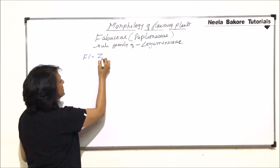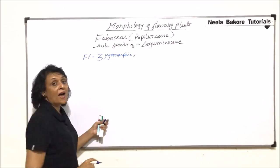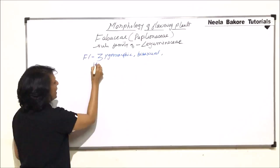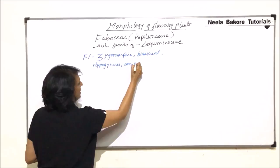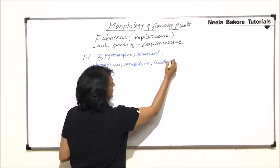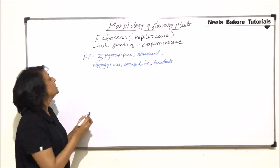In case of flower here it is zygomorphic. That means it is bilaterally symmetrical, can be cut into two equal halves only through one plane. The flower is bisexual, hypogynous, complete and most members of this family have bract, so it is bracteate. Very rarely bract is absent. So we have written all the words.